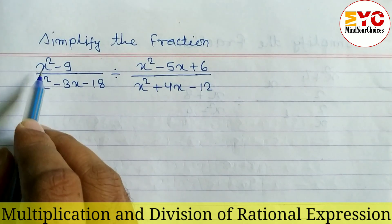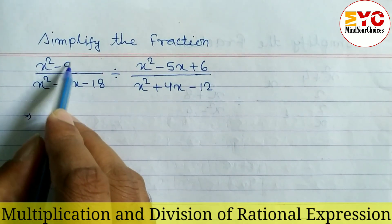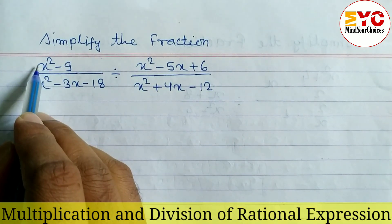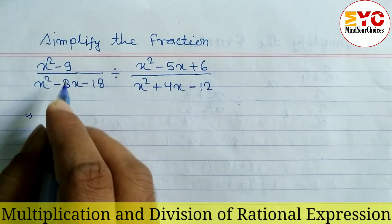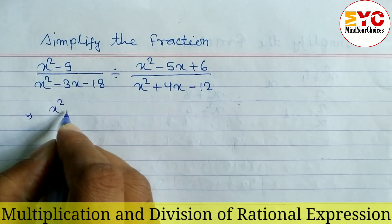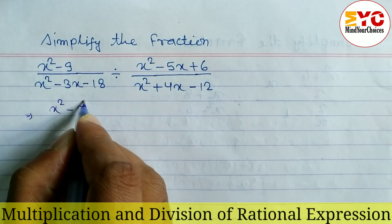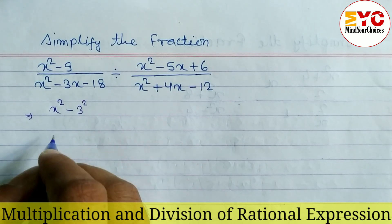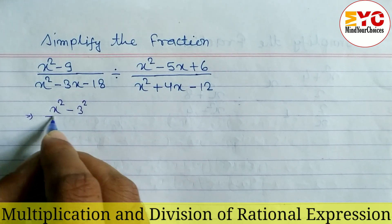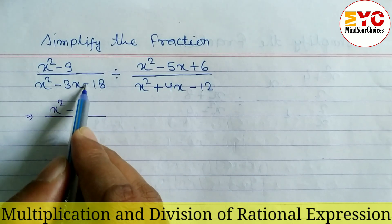We have x squared minus 9. First we have to convert this in the form of a squared minus b squared. The square root of 9 is 3, so we can write x squared minus 3 squared.